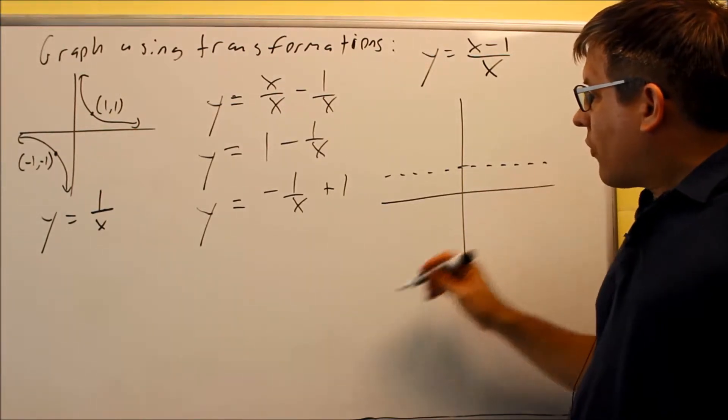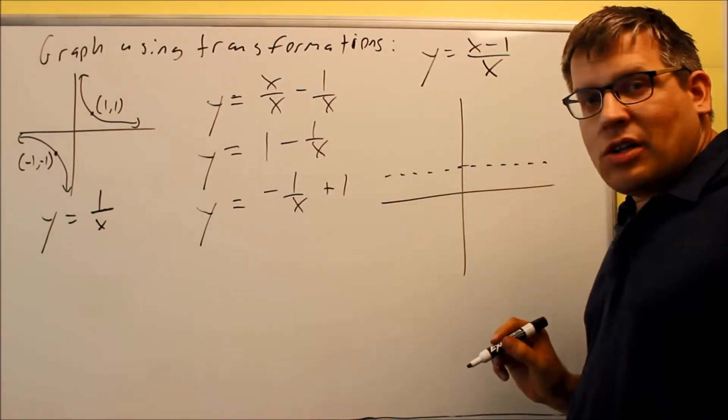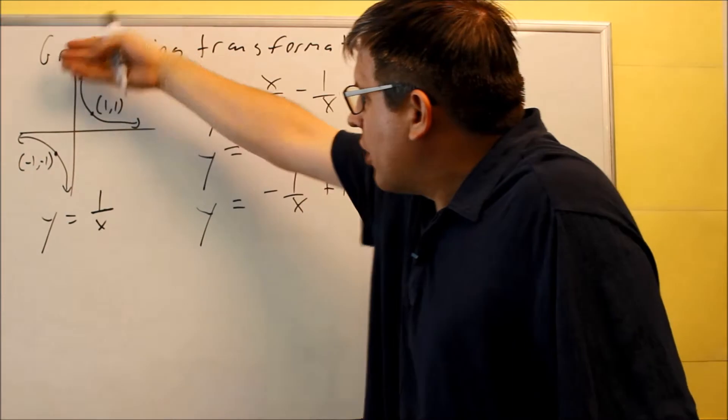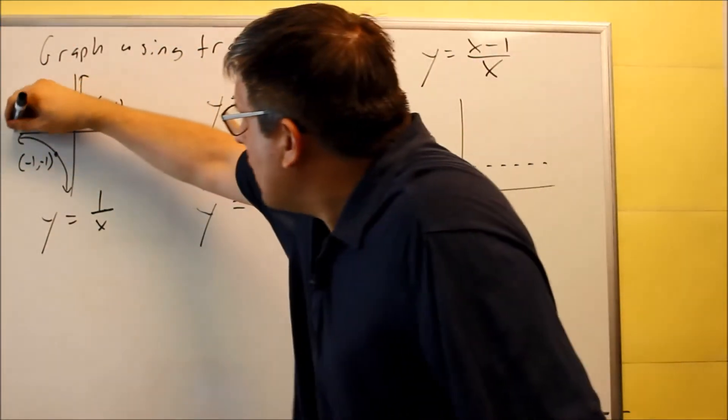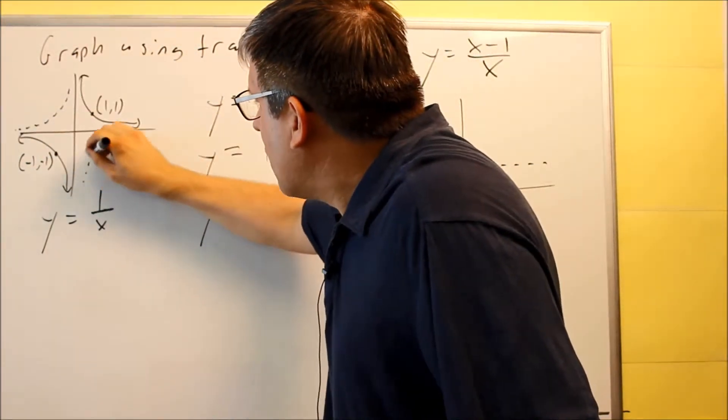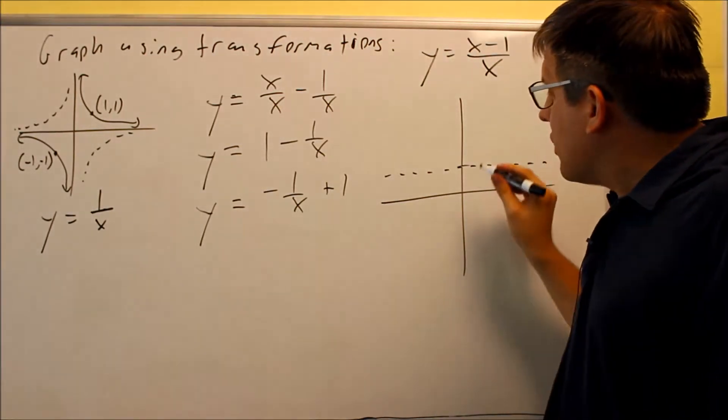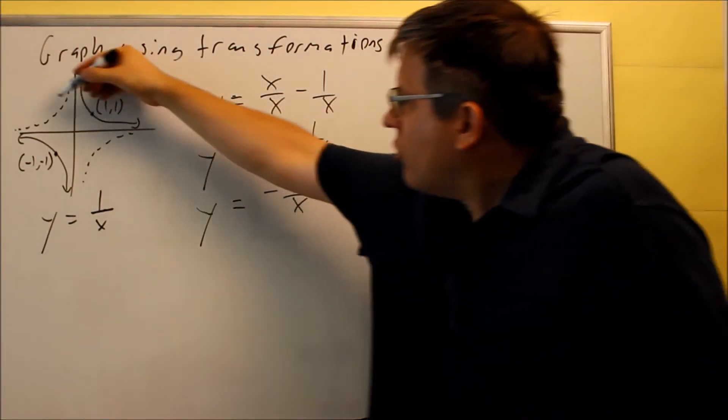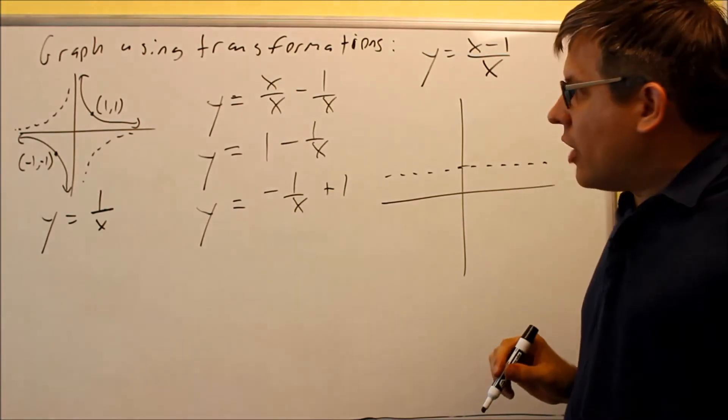What's the rest of the graph going to look like? The negative that's here flips the graph over the y-axis, which means that the graph is actually going to look like this dotted line right there. When you draw that in, the new graph is going to have to look like that dotted line.